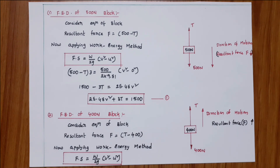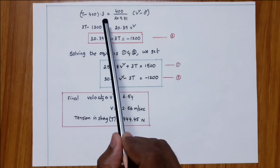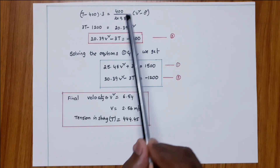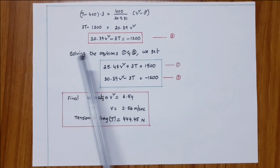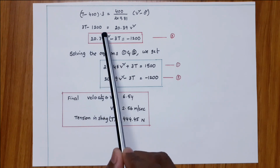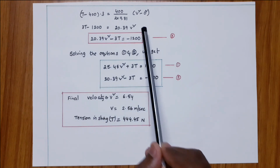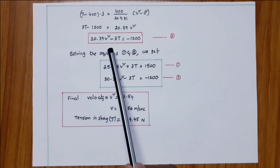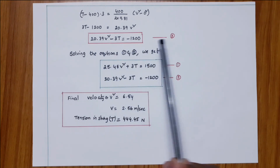Applying work-energy method: F times s equals W over 2g times (v squared minus u squared). Here F equals T minus 400, s equals 3, W equals 400, g is 9.81, u equals zero. This gives 3T minus 1200 equals 20.39 v squared, so 20.39 v squared minus 3T equals minus 1200. This is equation number two.